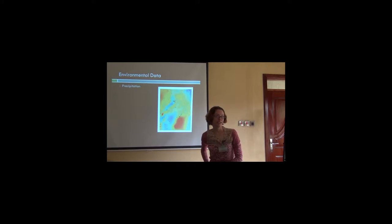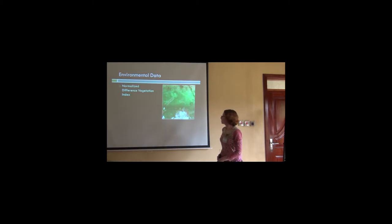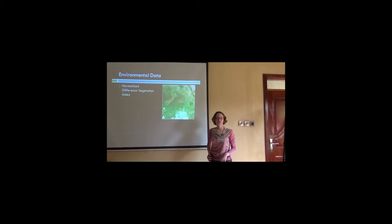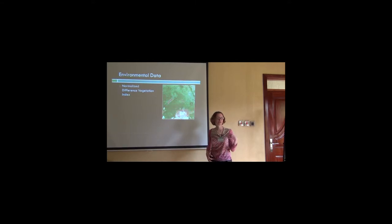This is another example of precipitation — also an interpolated surface. This next product measures the green-up of different vegetation in an area. This can be really useful if you're looking at a species where secondary forest is important. There's a certain range of values that represent secondary forest, so you can identify the variation across your study region and whether you're capturing all of that secondary forest or if there's more scrub-like vegetation in the region.